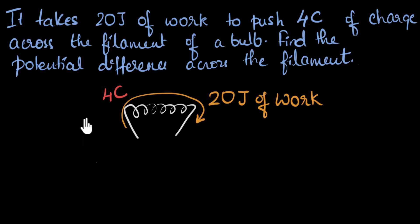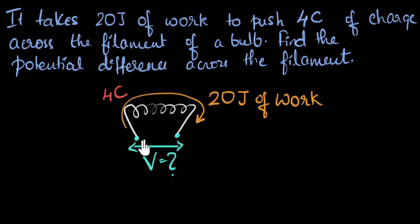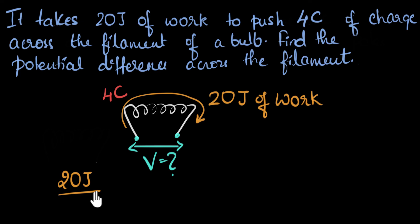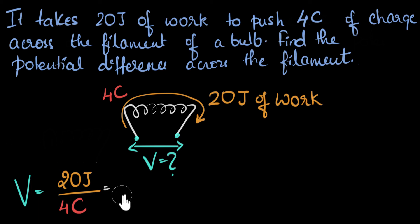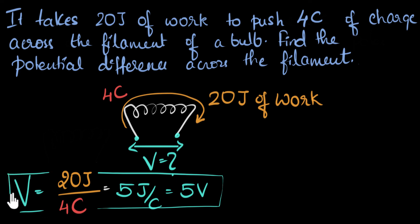Given this, we are asked: what is the potential difference across the filament? Going back to our definition, potential difference is a measure of how much work needs to be done per coulomb. We know to push four coulombs, we have to do 20 joules of work. So to move one coulomb, how much work should we do? The amount of work would be 20 joules per four coulombs — because that's what voltage is: a measure of how many joules per coulomb. That would be five joules per coulomb. Four goes into 20 five times, so five joules per coulomb. Joules per coulomb is what we call a volt. So the potential difference across the filament of the bulb is five volts.